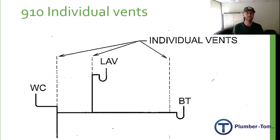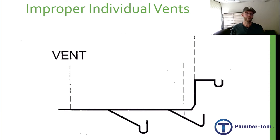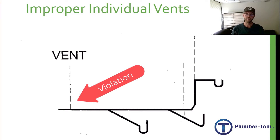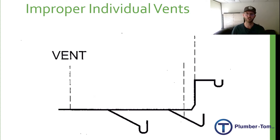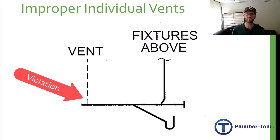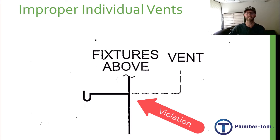As we look at some of our other options, have a look at a few improper individual vents. On the right we have a couple that are done correctly, but in the middle we have a floor drain coming off and the vent is not connected directly to that trap arm. The drain that comes over to the trap is where that vent should be connected, not downstream on the horizontal branch. Here's another similar example: we have the trap arm coming off of the horizontal branch, but there are also fixtures from a stack above. That vent is downstream and not connected directly to the arm of the trap, and therefore it is not venting properly for an individual vent.